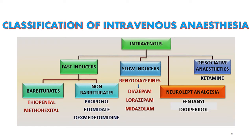There are four varieties of available intravenous anesthetic agents: fast inducers, slow inducers, neurolept analgesia, and dissociative anesthetic agents. Fast inducers are barbiturates or non-barbiturates — thiopental and methohexital are barbiturates; propofol, etomidate, and dexmedetomidine are non-barbiturates. Slow inducers are benzodiazepines. Neurolept analgesia is given in combination with fentanyl and droperidol. Dissociative anesthesia is ketamine.